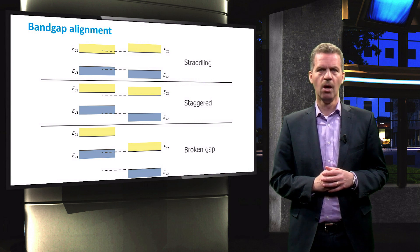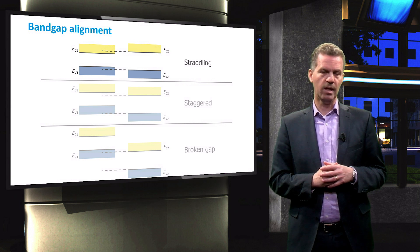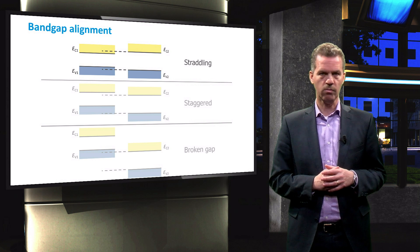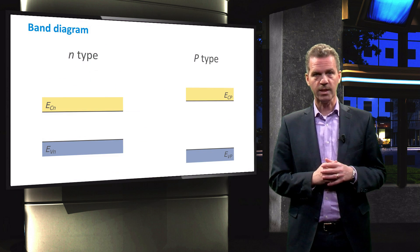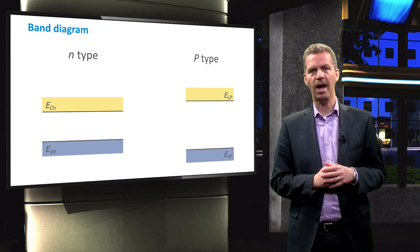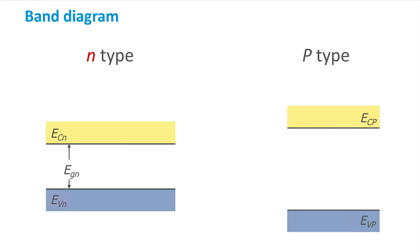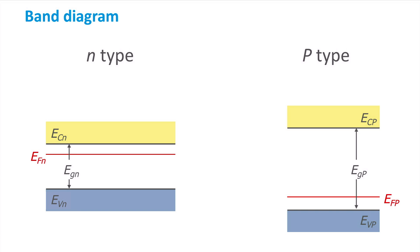Here you can see an overview of all possible band gap alignments. In this course, we will focus on the straddling band alignment. Now that we know how the bands will align, we can construct a band diagram of a heterojunction. For this example, we will look at a heterojunction consisting of a low band gap n-type and a high band gap P-type material. For the low band gap n-type semiconductor, the n will be presented using a lower case letter, while for the high band gap P-type semiconductor, the P will be written with an upper case letter. The position of the Fermi level indicates the type of material.